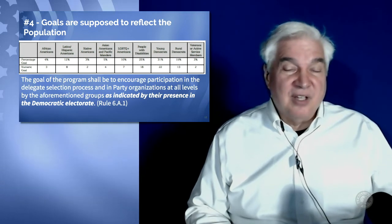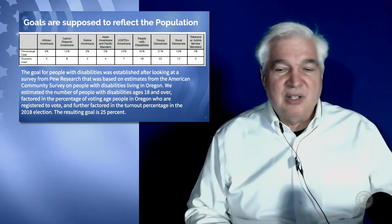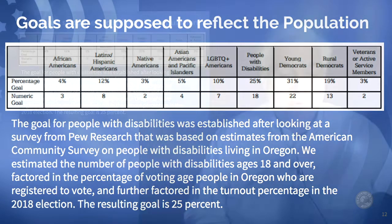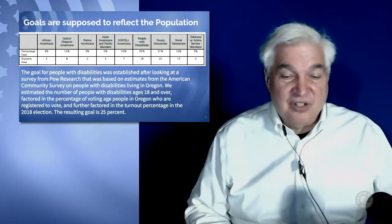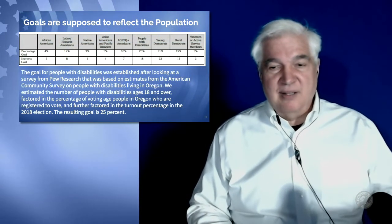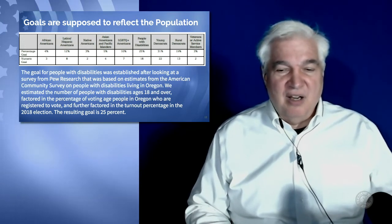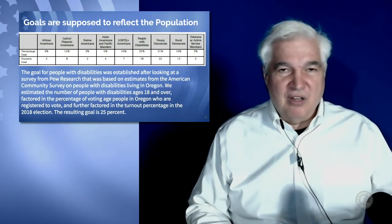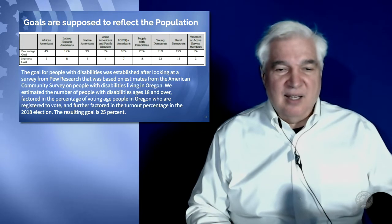The goal for people with disabilities was established after looking at a Pew Research survey based on estimates from the American Community Survey on people with disabilities living in Oregon. They estimated the number of people with disabilities ages 18 and over, factored in the percentage of voting age people in Oregon registered to vote, and further factored in turnout percentage in the 2018 election — and that's how they came up with 25%. We just need to understand what characteristics qualify as a disability so people can understand if they fit that category.